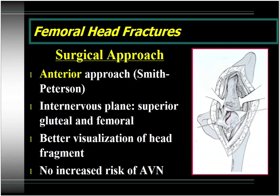The surgical approach for femoral head fractures is a little bit controversial. Although most result from posterior hip dislocations, intuition to approach posteriorly is actually not the case. The best approach — because these fractures are typically located in the anterior, inferior portion of the femoral head — is through an anterior Smith-Petersen approach. This approach utilizes the internervous plane between the superior gluteal nerve and the femoral nerve, most superficially between the sartorius and tensor fasciae latae, with deep dissection between the gluteus medius and the rectus. This gives you much better visualization of the femoral head fragment, and there has not been shown to be an increased risk of osteonecrosis by approaching these fractures in this manner.